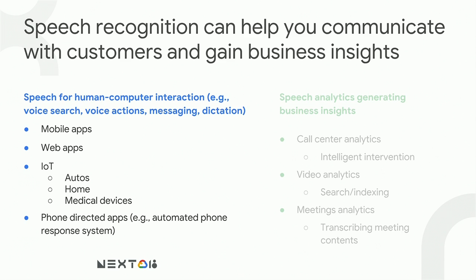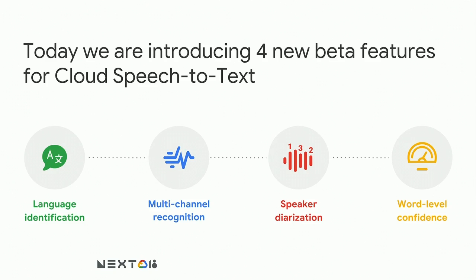There are two main use cases that we address: speech for human-computer interaction and speech analytics. Human-computer interaction is typically one person talking to a computer and then the computer reacting to it — voice search or voice actions. Speech analytics is analyzing conversations between different humans — it could be in a phone call or in a meeting. We're going to structure the conversation today around those two sets of use cases. We're introducing four new beta features: language ID, multi-channel recognition, speaker diarization, and word-level confidence. They all make speech-to-text much more useful and practical.